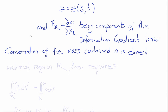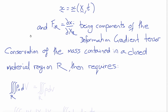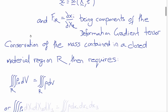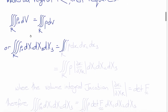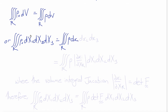Conservation of the mass contained within a closed material region R can then be expressed as follows. The triple integral over the region R of rho_0, the undeformed density, with respect to volume in the undeformed state, is equal to the triple integral over R of the deformed density rho with respect to the deformed volume dV. Writing this in components, the triple integral over R of rho_0 equals the triple integral over R of rho times d(x_1) d(x_2) d(x_3).